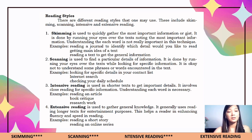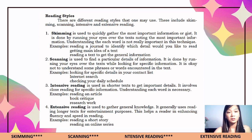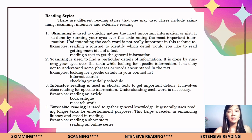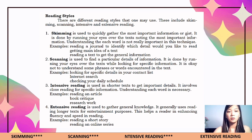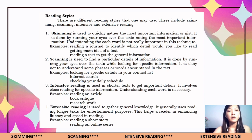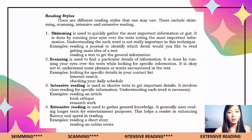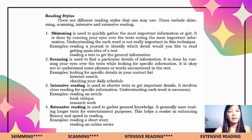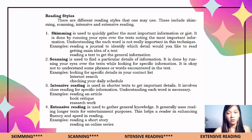Skimming is done by running your eyes over the text, noting the most important information. Understanding each word is not really important in this technique. Examples include: reading a journal to identify which detail you'd like to read, getting the main idea of a text, and reading a text to get general information.